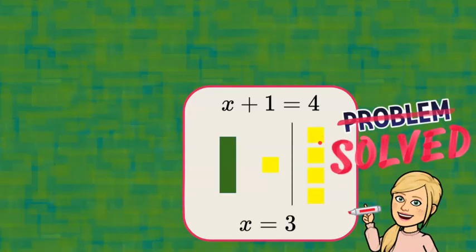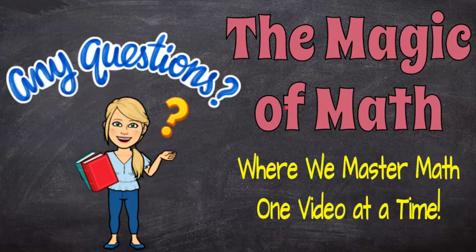There you have it — that's how you solve algebraic equations using addition and subtraction. I hope that helped you today and that you can relate using algebra tiles to our properties of equality and creating zero pairs. I hope you'll come back soon and join me at The Magic of Math, where we master math one video at a time. Have a great day, bye!